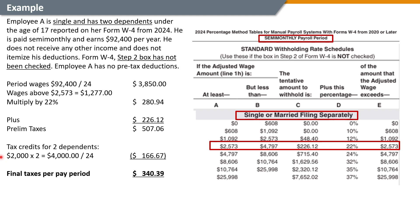However, we still need to give Employee A credit for having dependents. Each dependent under age 17 is worth $2,000 in tax reductions per year, while other dependents use the lower amount of $500. In this case, both dependents are under 17, so the total annual credit is $4,000. We divide $4,000 by 24 — the number of semi-monthly pay periods — which gives us $166.67. We subtract that from $507.06, resulting in a final federal tax withholding of $340.39 per paycheck.